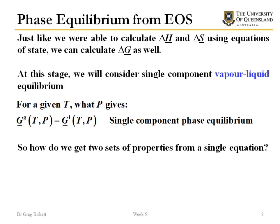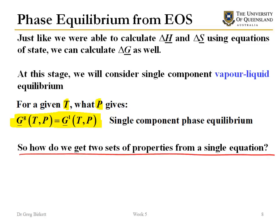Just as we were able to calculate ΔH and ΔS using equations of state, we can also calculate ΔG. What we'll consider in this section is calculating the vapor-liquid equilibrium for a single component. The question becomes: for a given temperature, what pressure satisfies the criteria where the gas phase Gibbs free energy and the liquid phase Gibbs free energy equal each other? How can we do that for ourselves using an equation of state? The question that immediately comes to mind is how do we get two sets of properties from a single equation.